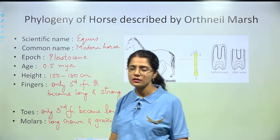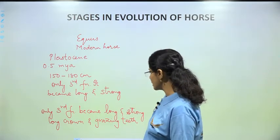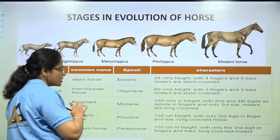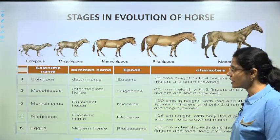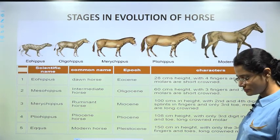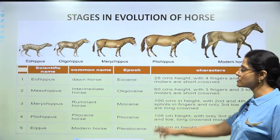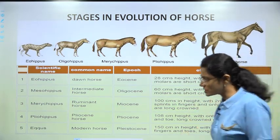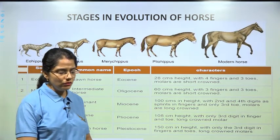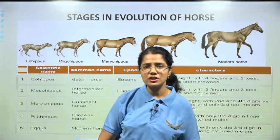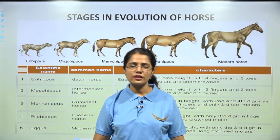With this we are done with the evolution of horse — the phylogeny of horse as described by Othniel Marsh. The first form was Eohippus, the Dawn Horse, and we've traced through to the modern Equus. This also completes the paleontological evidences. In the next video we will be discussing the biogeographical evidences. Thank you. Jai Bharat.